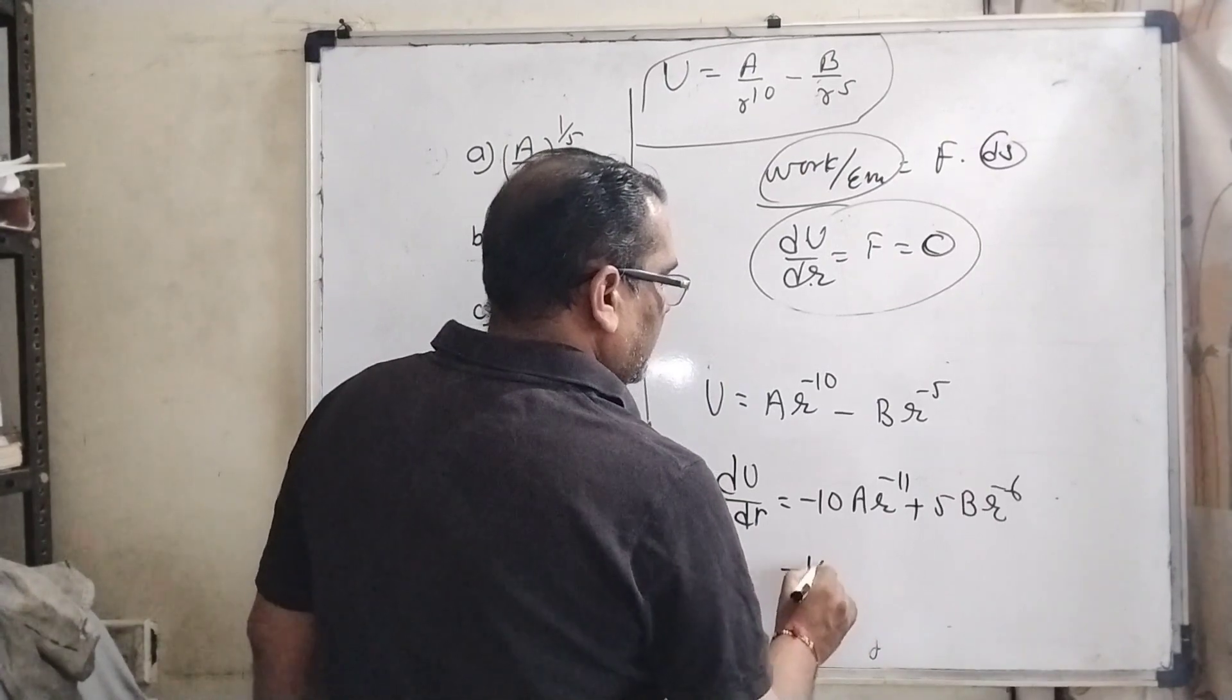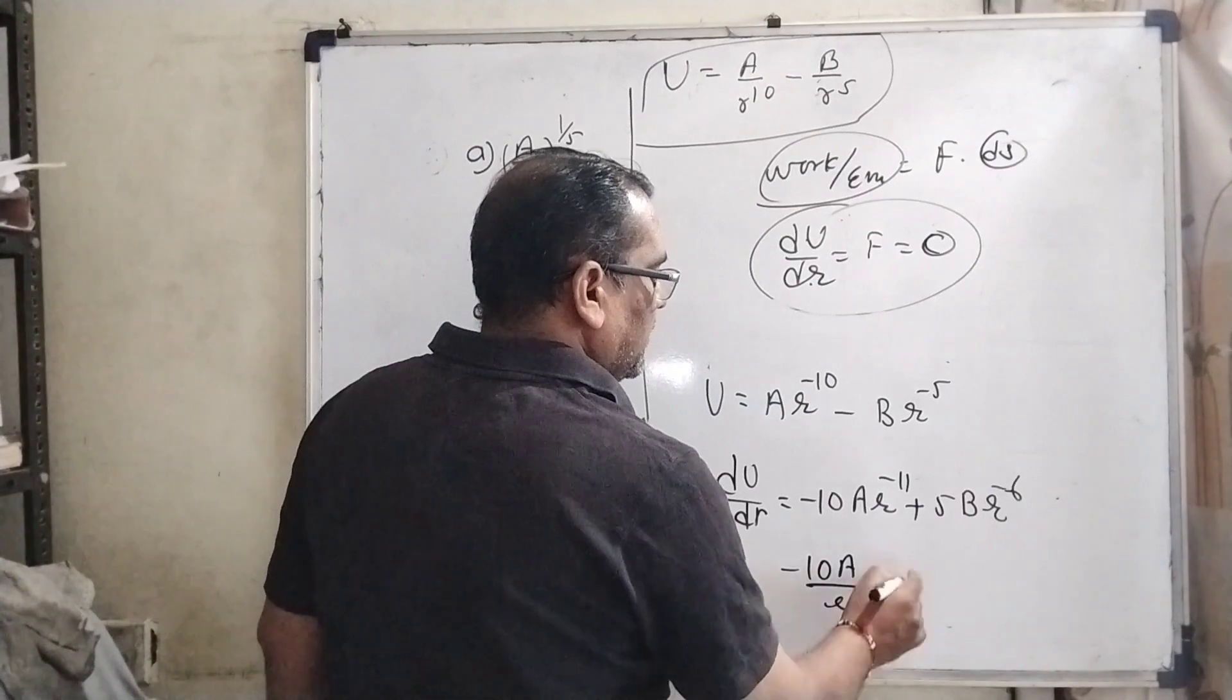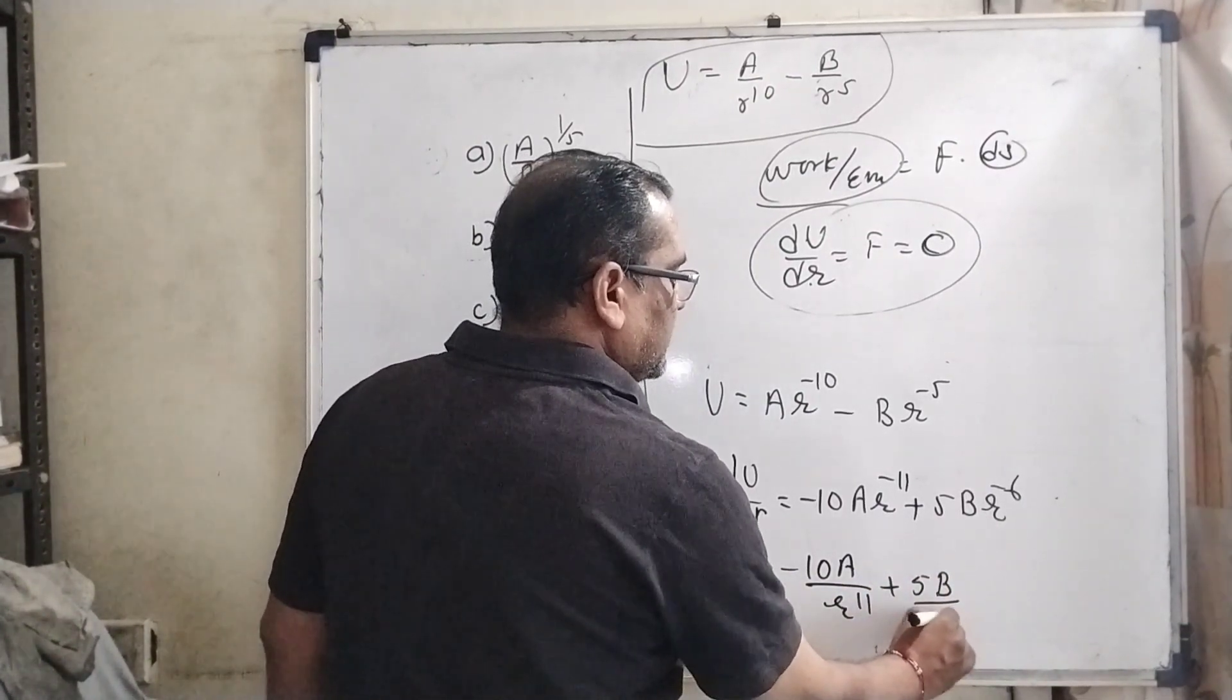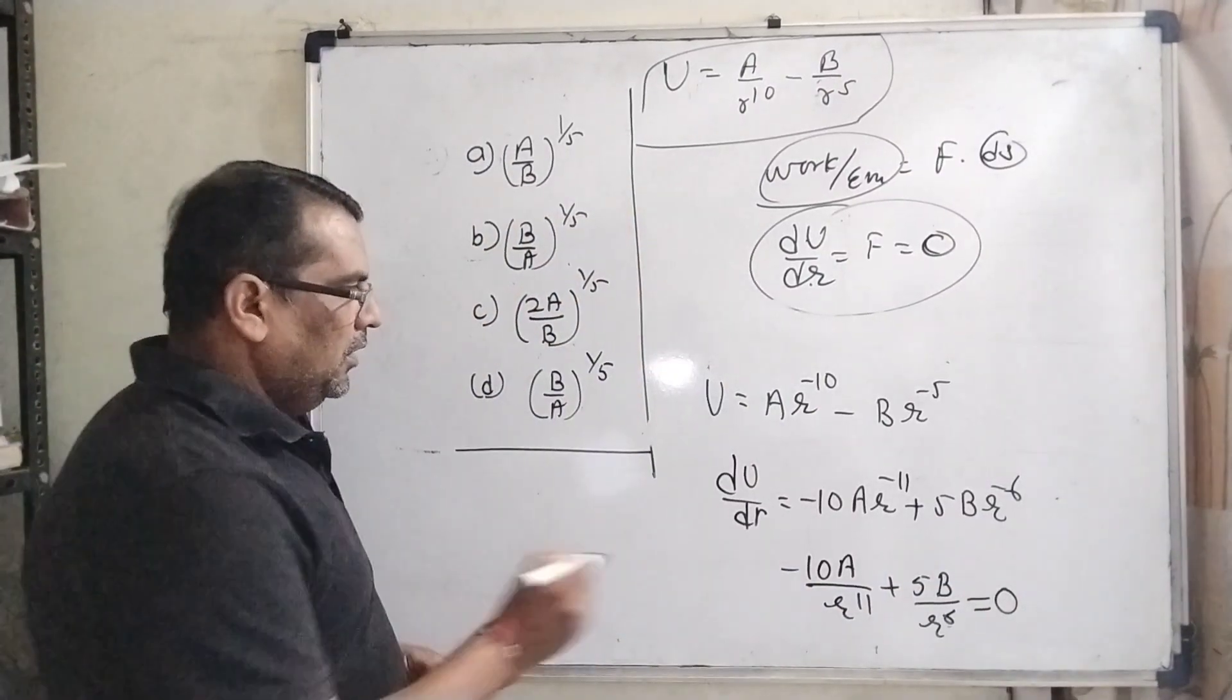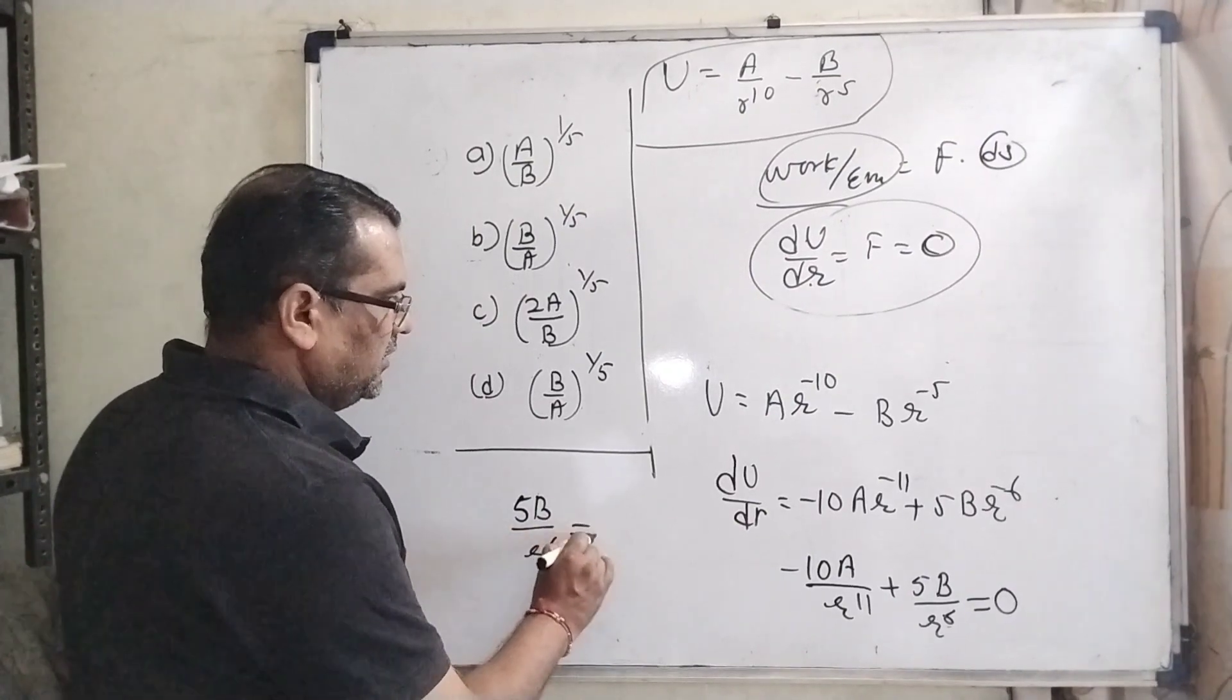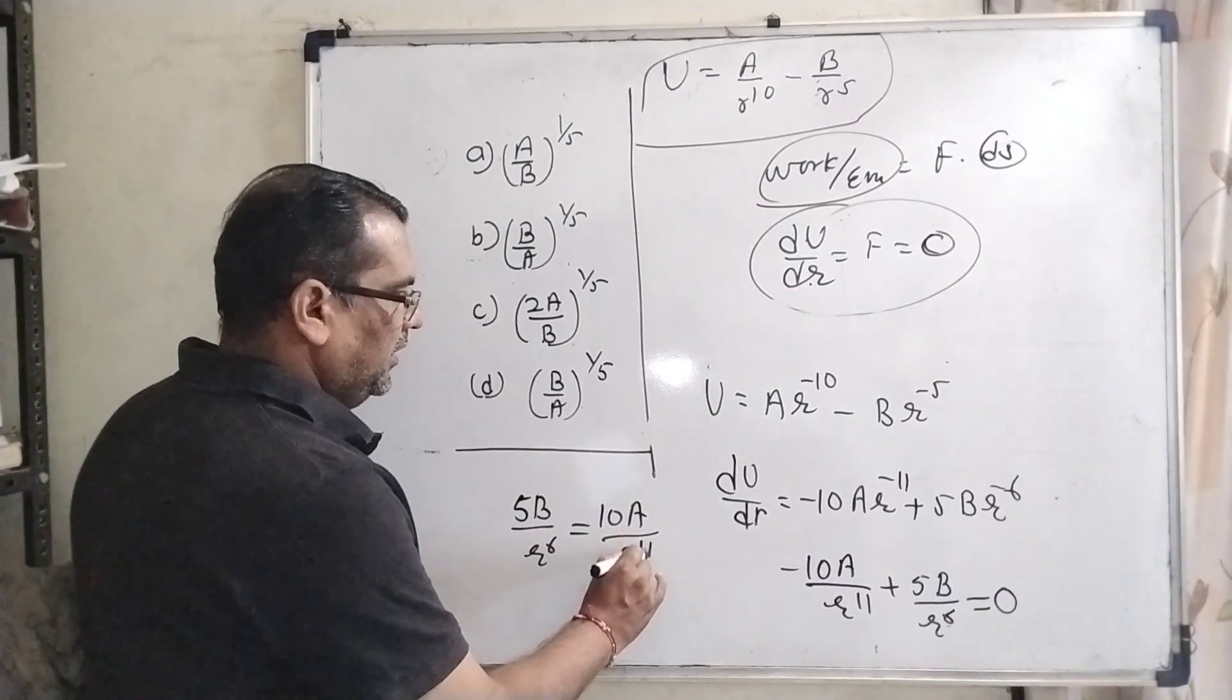So here minus 10 A r raised to power 11 plus 5 B r raised to power 6 is equal to 0. Now 5 B upon r raised to power 6 is equal to 10 A by r raised to power 11.